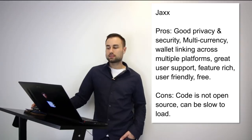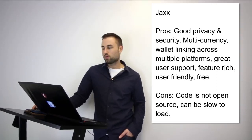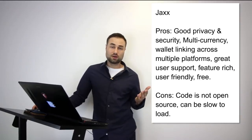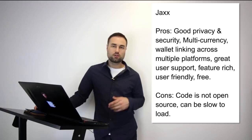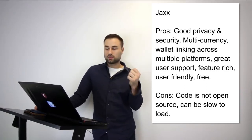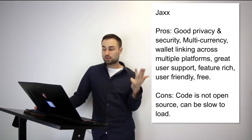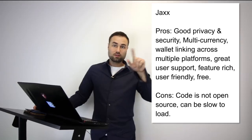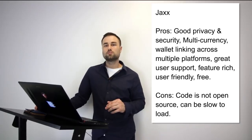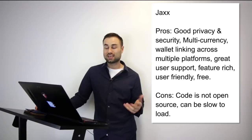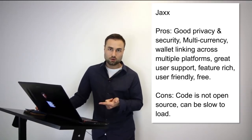Next is Jaxx — another mobile wallet. What's really great about Jaxx is multi-currency support: Ether, Ether Classic, Dash, Litecoin, Bitcoin, and many more. Another great feature is the user interface — Jaxx has one of the best UX designs possible; it's quite intuitive so when you log in you know exactly what's going on. Pros: good privacy and security, multi-currency wallet, links across multiple platforms — you can have it on your desktop and iPad and they sync together. User-friendly with excellent UX. Cons: it's not open source and it can be really slow. Jaxx is my go-to multi-currency wallet on my phone.